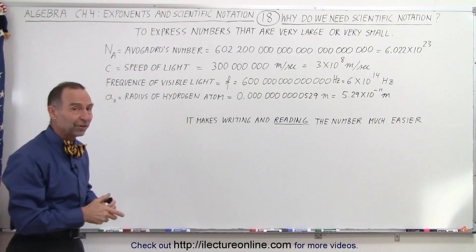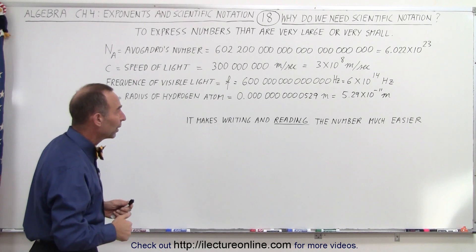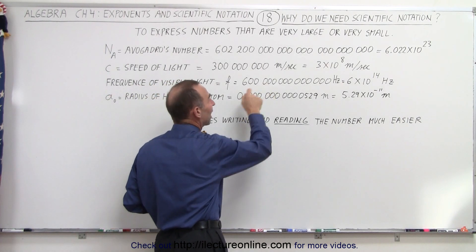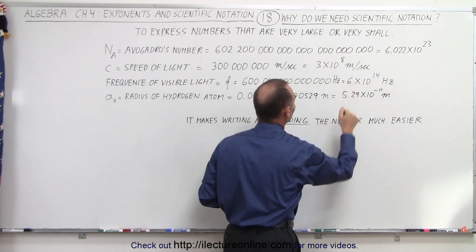Or, the number of times that visible light oscillates, the frequency of visible light. That is 600 trillion times per second. Again, it is much easier to write 6 times 10 to the 14th.